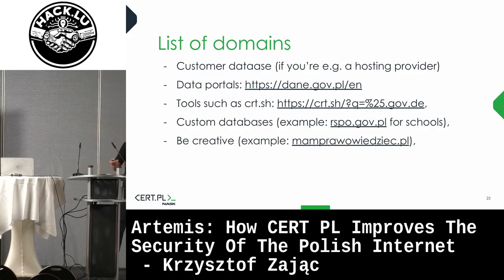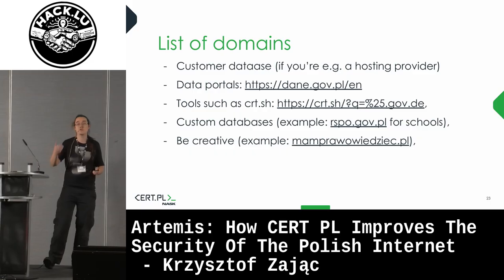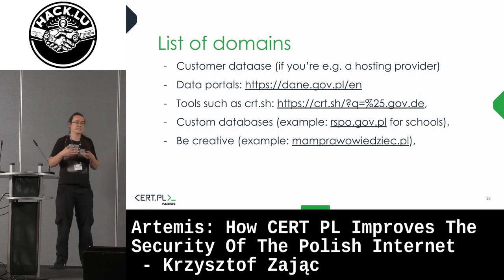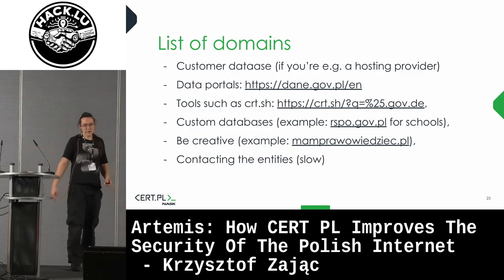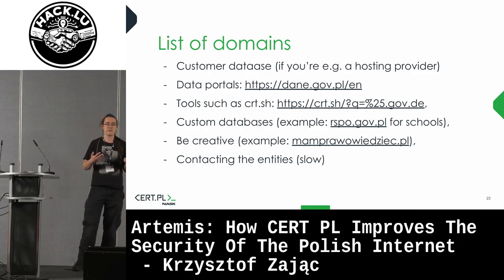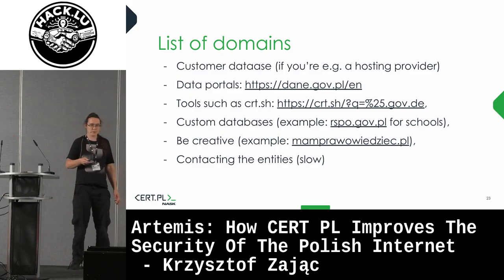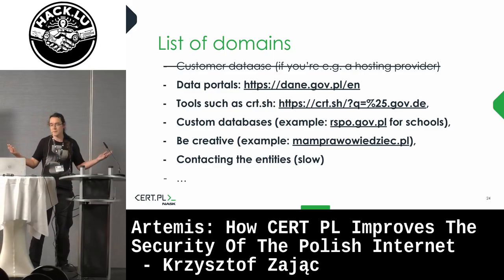You may scrape a portal — for example, 'mamprawo wiedziec.pl' (I have the right to know), which contains information about Polish politics, politicians, parties, senators, candidates. We could scrape it and run scans of candidates before elections, because if we don't do this, bad guys can do this as well. There are multiple sources of domain data, and if you want to run your scans you will have plenty of sources in your country. In CERT.PL we try all of these data sources because we don't have a central data portal for everything.